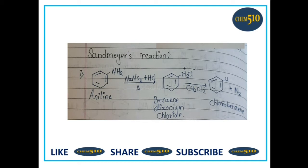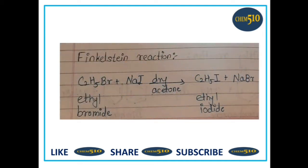Here, firstly aniline is diazotized to form benzene diazonium chloride, which on reaction with copper salt — copper chloride — forms chlorobenzene, and nitrogen gas is evolved. So the product is chlorobenzene, which is an aryl halide. Formation of aryl halide takes place in Sandmeyer reaction.